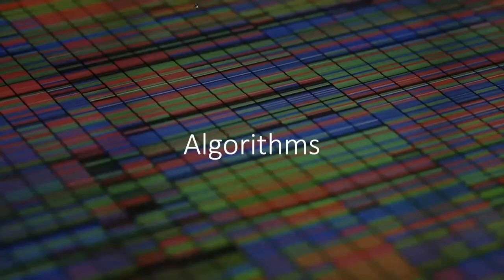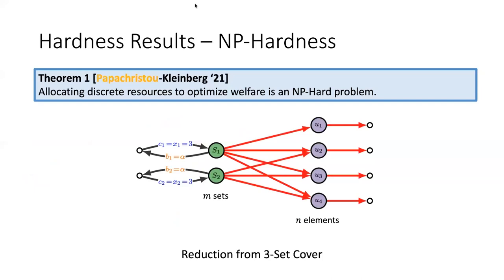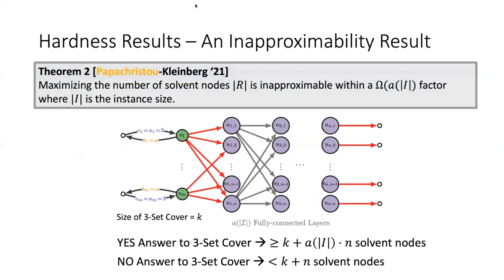As one would expect, these problems are combinatorially intractable, and efficient approximation algorithms need to be designed. Regarding combinatorial hardness, the discrete allocation problem is NP-hard by reduction from 3-set cover. We construct a bipartite graph where sets are represented by nodes on the left and elements by nodes on the right. The sets can provide cash to the corresponding elements they contain, and a set cover of size k is equivalent to a set of allocations corresponding to the left vertices belonging to the set cover solution.